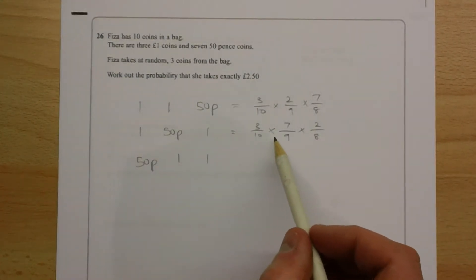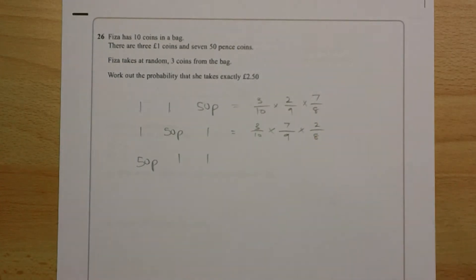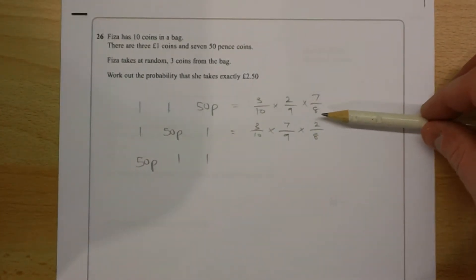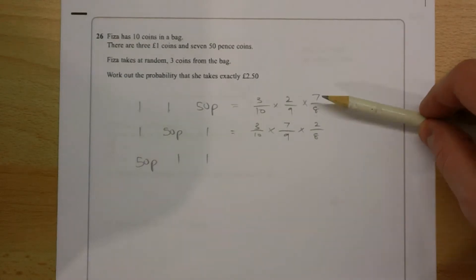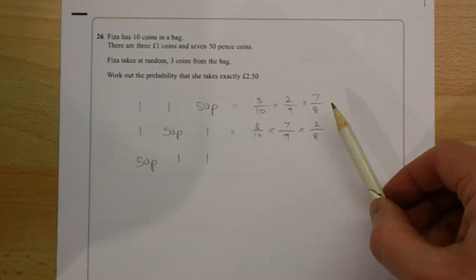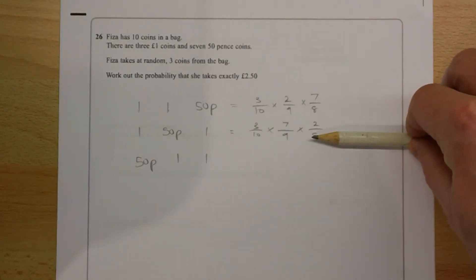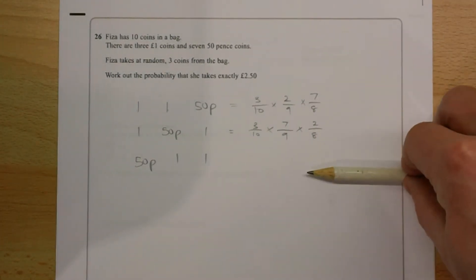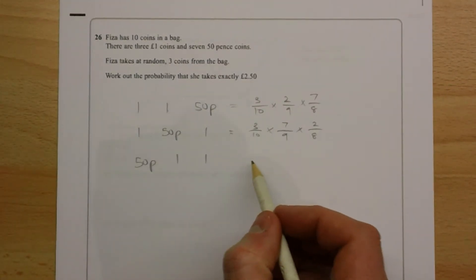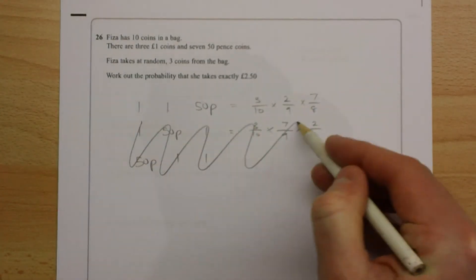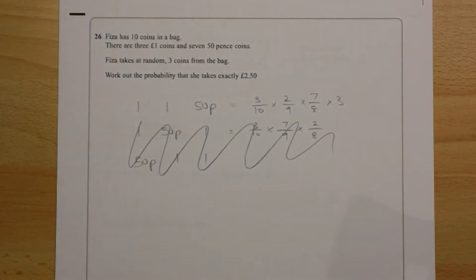Now hopefully what you'll notice is that these fractions are different, but it's the same 3 numerators and the same 3 denominators. And because we're multiplying these all together, it doesn't matter what order the numbers are in. This is going to give us exactly the same answer as this one, and then this one will do the same. So rather than working out this one separately and adding all three together, we can just recognize that we've got 3 lots of this.